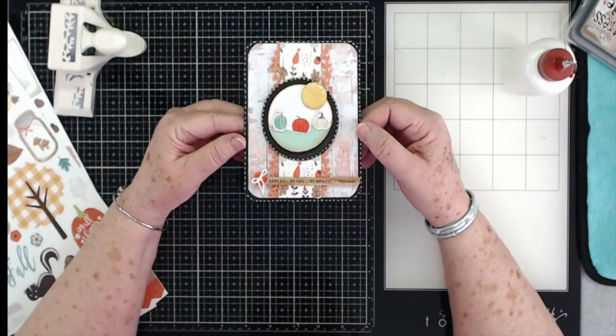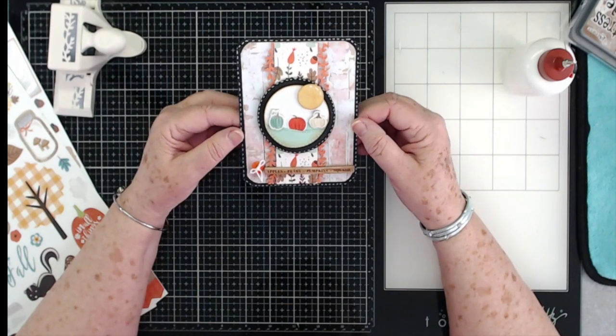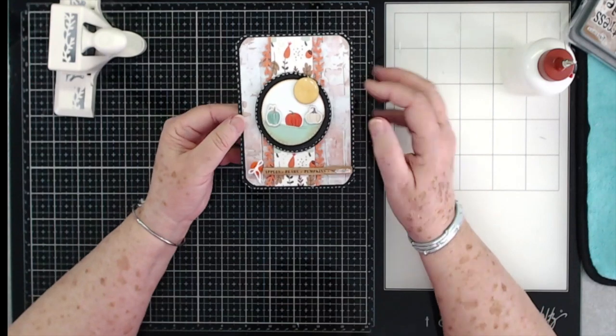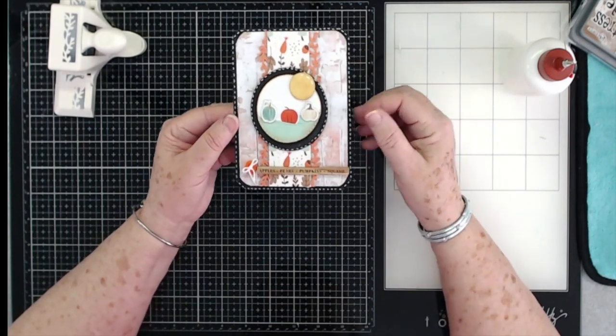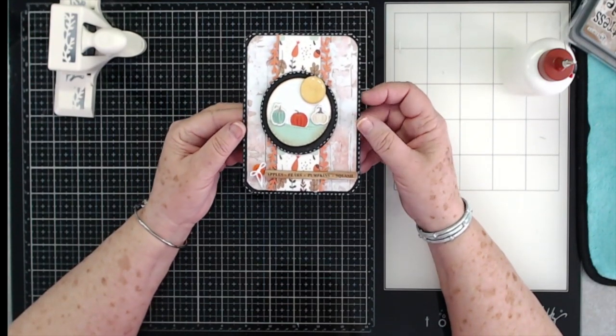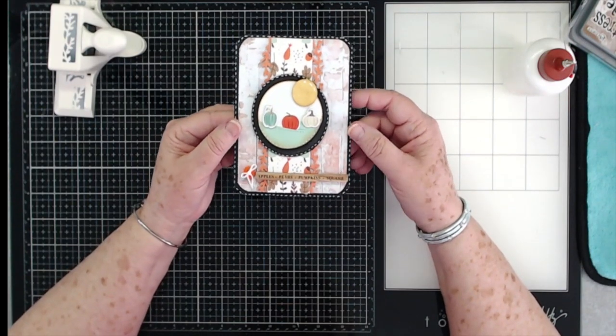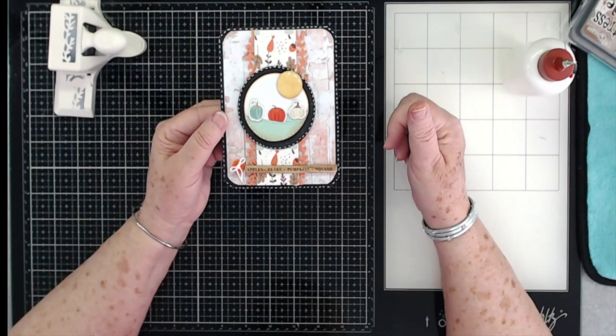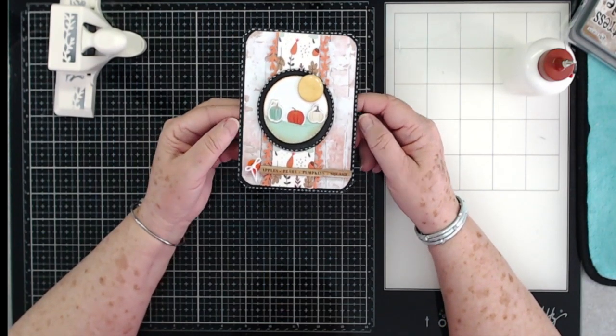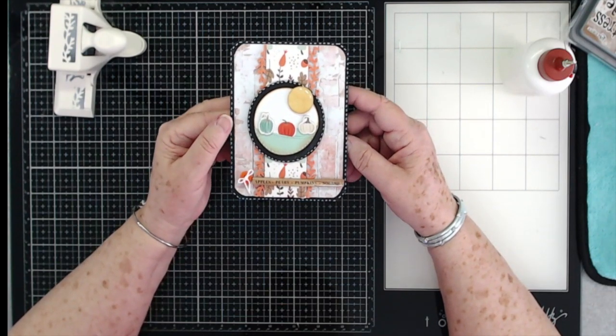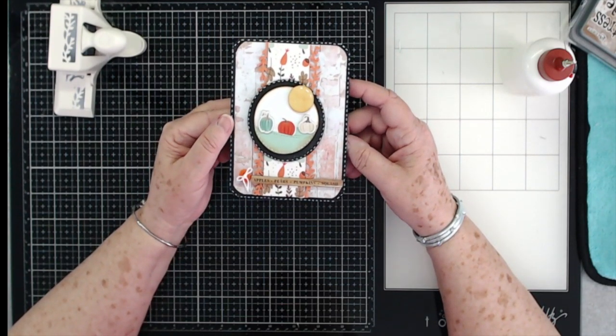Alright, so that is it, we're going to call this card finished. Quick and easy, simple, just using some of the items that we got from our October kit and then some items from the add-on, and then just a few pieces from our scraps. Alright guys, if you enjoyed this tutorial, please give us a thumbs up and hit that subscribe button. Don't forget to click that little bell when that bell pops up so that you'll be notified when we put up a new video. We will talk to you guys later. Bye bye!